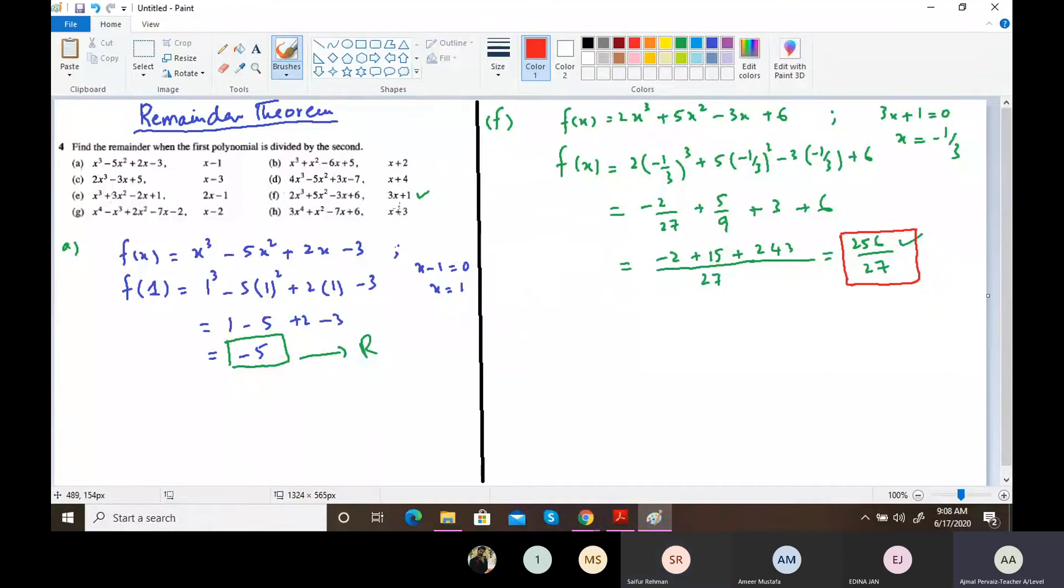So I hope you are clear about that. Just by placing the second polynomial's value, this one, in the first one, and whatever the number you will be getting by placing it just like we were placing in the functions, the final value will be getting, this is called the remainder. And if this remainder gives a value equals to zero...